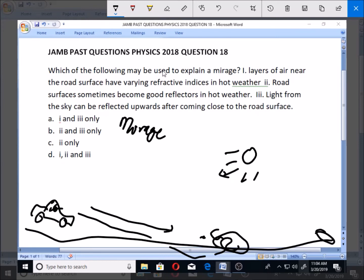Now, layers of air near the road surface have varying refractive indices in hot weather. That is true. So I is true. Now, road surface sometimes become more reflectors in hot weather. Does something become more reflector after sometimes and doesn't become in some other times? You see that this is shaking. But this number three option, lights from the sky can be reflected upwards after coming close to the road surface. That is reflection and that is true. So you can easily see that I and III are very true.